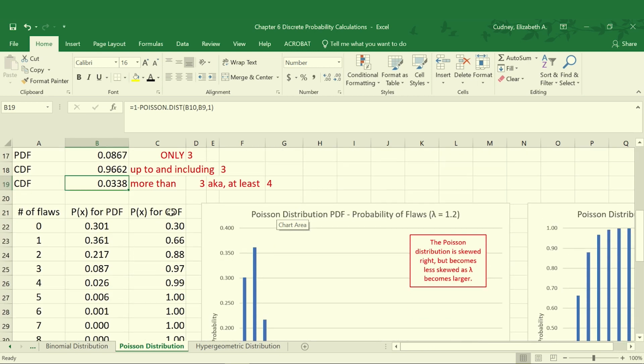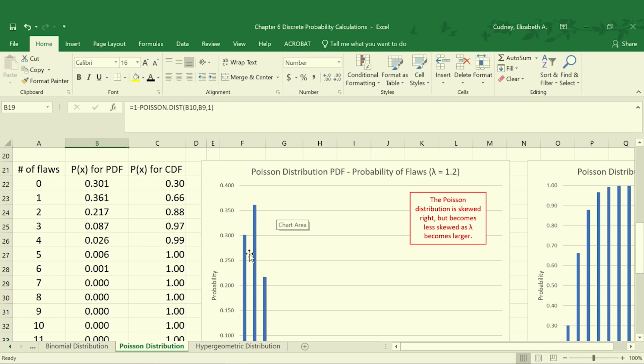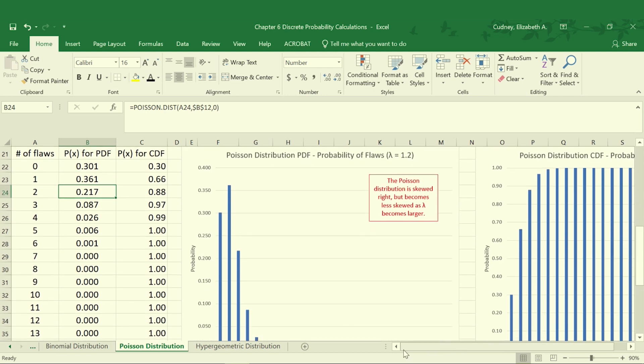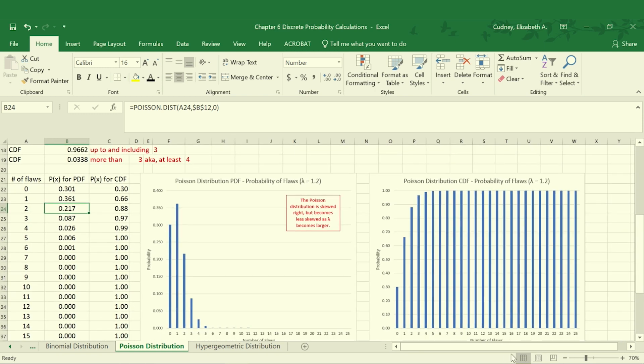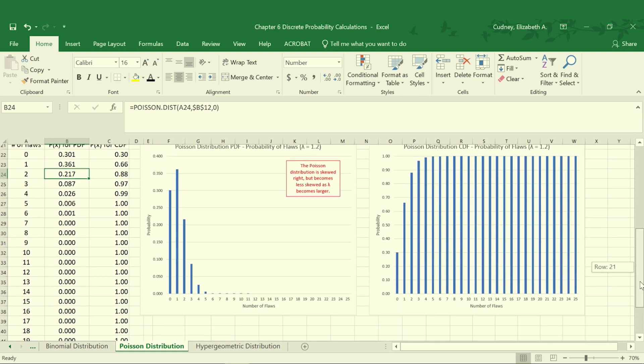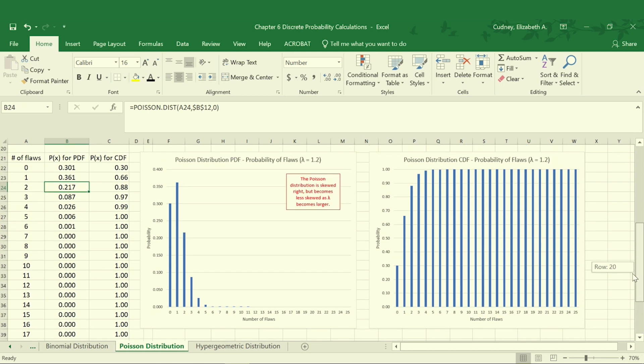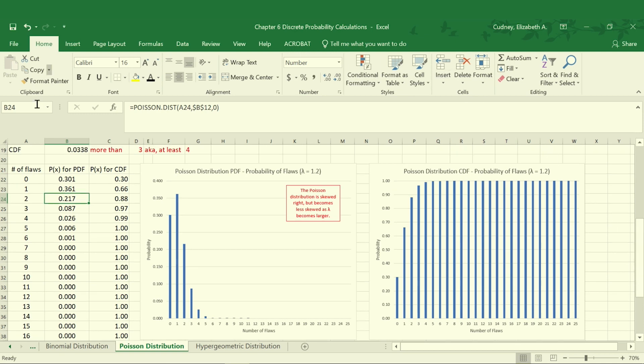Here again, we can go through and calculate our PDF for each individual one, and we can graphically represent what that data looks like. So in this case, I've calculated it for up to 25 defects. But as you can see, it's really once you get up to seven or more, the probability is zero or less.